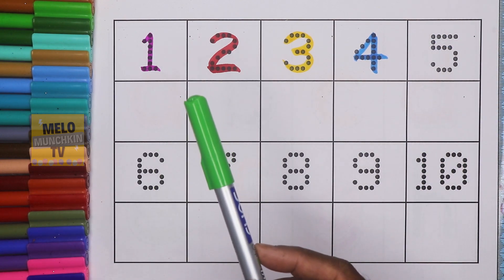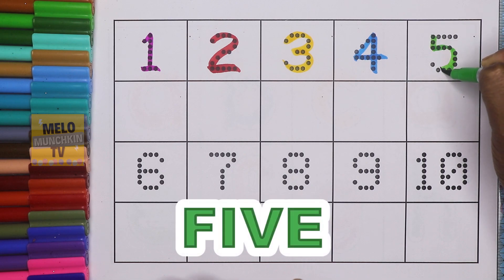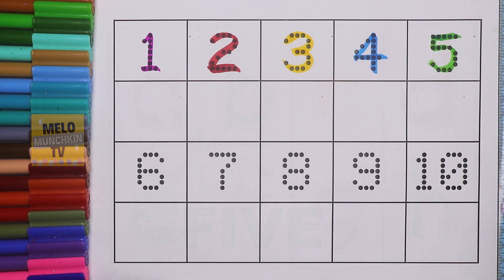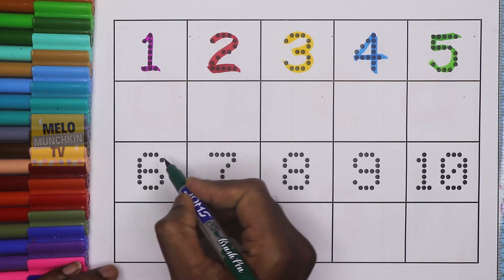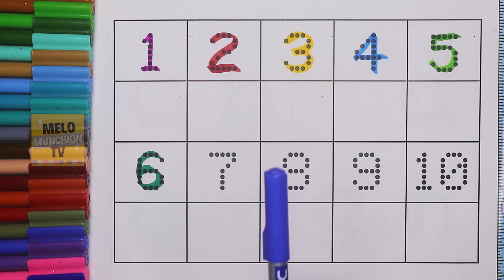Light green color. This is 5. F-I-V-E. 5. Dark green color. This is number 6. S-I-X. 6.